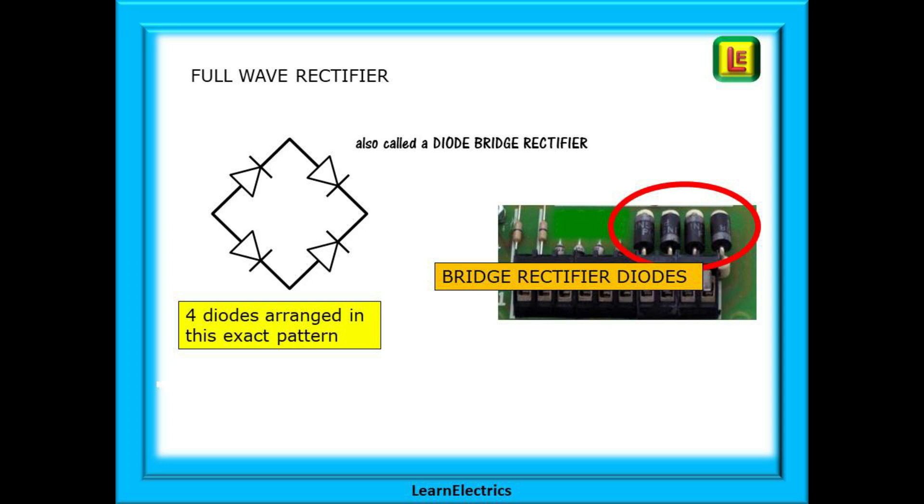To add the two half cycles together we can arrange four diodes in the pattern shown and you may see these diodes on some circuit boards. Four diodes lying side by side is usually a good indication that these are the bridge rectifier diodes.